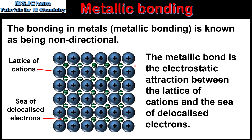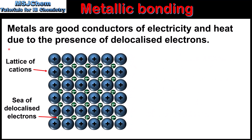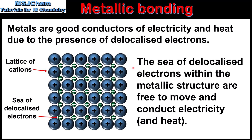Next we'll explain the properties of metals. The first properties we'll look at are electrical and thermal conductivity. Metals are good conductors of electricity and heat because of the presence of delocalized electrons within the metallic structure. These delocalized electrons are free to move within the structure, and the sea of delocalized electrons within the metallic structure are free to move and conduct electricity and heat.